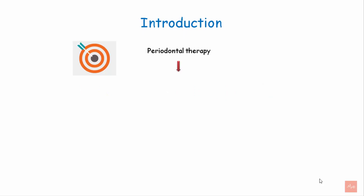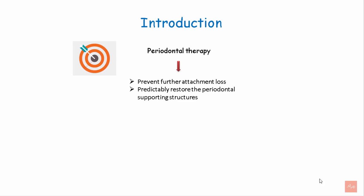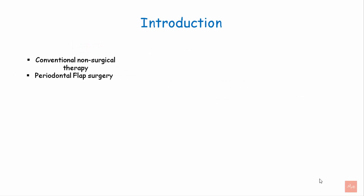The aim of periodontal therapy is to prevent further attachment loss and to predictably restore the periodontal supporting structures which are lost due to disease or trauma. The role of conventional non-surgical therapy and periodontal flap surgery in the treatment of periodontal disease has been established. They help in halting the disease progression.